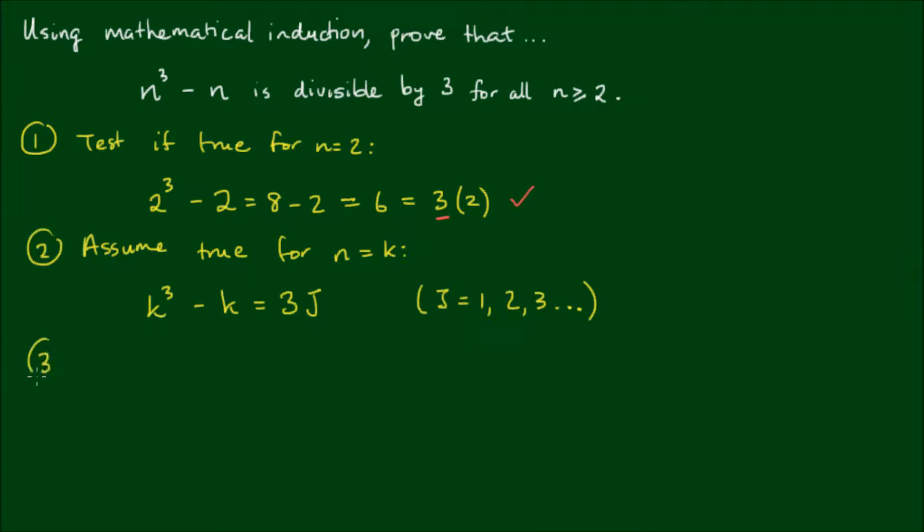And for the third step, we prove that it is true for the next value of n. So n equals k plus 1. With n equals k plus 1, we say k plus 1 cubed minus k plus 1 is equal to...